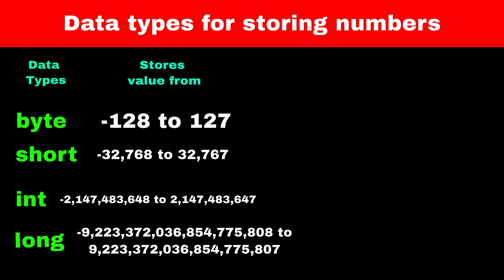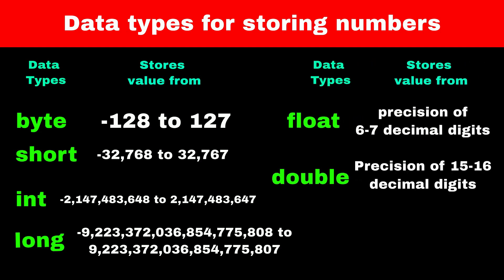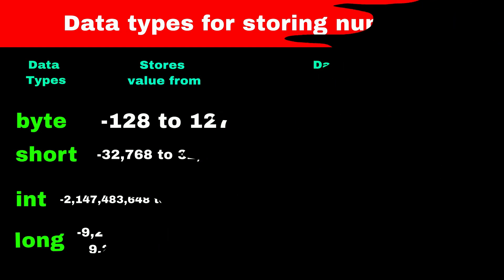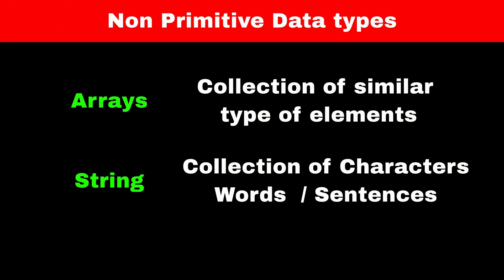You can see the allowed range for each data type on your screen. Next are float and double, used for storing numbers with decimal places. Depending on the size and precision of a number, we choose the appropriate data type. Java also has more complex data types, like strings and arrays.